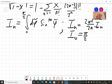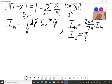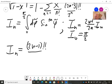The result for i n is as follows: i n is 2n minus 1 double factorial over 2n double factorial times pi over 2. So now I have all the ingredients and I can write the expression for the perimeter.